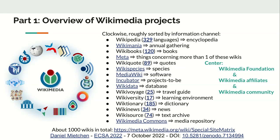First, an overview of the Wikimedia projects. You are probably familiar with Wikipedia, and the others have all grown around it. They are roughly sorted by information channel: Wikipedia is the encyclopedia, WikiNews is for news, WikiQuote is for quotes, WikiSource is an archive, WikiSpecies is for species, and so on. Wikimania is the annual gathering, WikiBooks is for books, and so on.